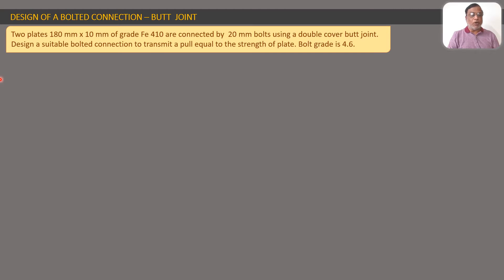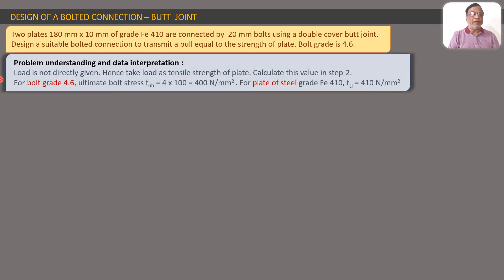To solve the problem, first let us interpret and understand the statement itself. If we read the statement carefully, we find that the load is not directly given. They are asking us to design a suitable bolted connection to transmit a pull equal to the strength of the plate. So they are asking us to calculate the strength of the plate and take that as the load to be transferred. When the load is not given, take the load as the tensile strength of the plate. We will calculate the tensile strength of the plate in step 2.